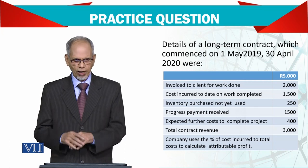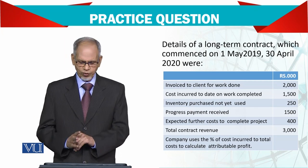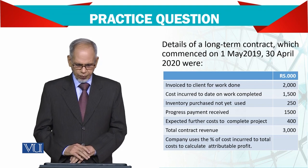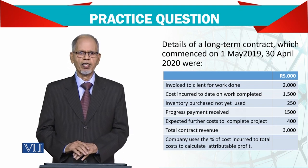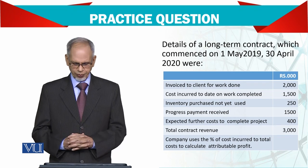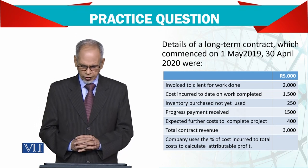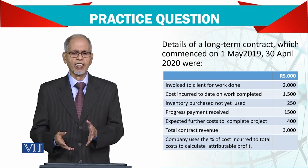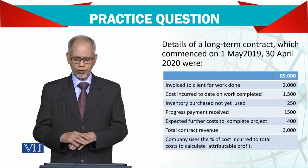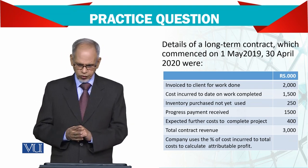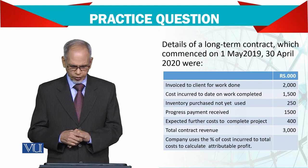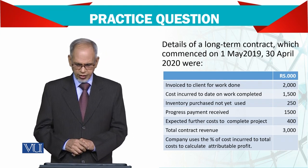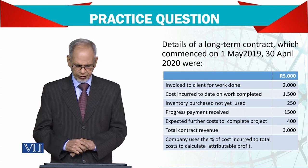For example, cement — you have bought it for the project. Progressive payment received — you have received payment. Expected future cost to complete the project is 400,000. Total contract revenue is 3 million.